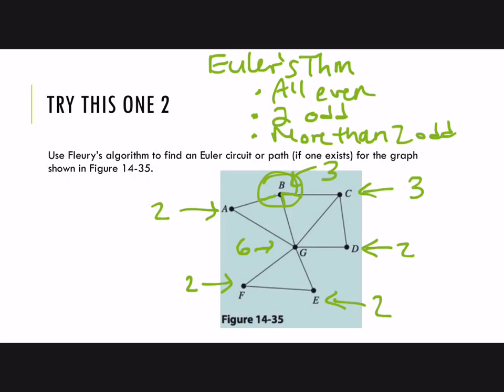So we have exactly two odd vertices, which means that we don't have an Euler circuit, but we do have an Euler path. And we know that it's going to either start at B and end at C, or start at C and end at B.